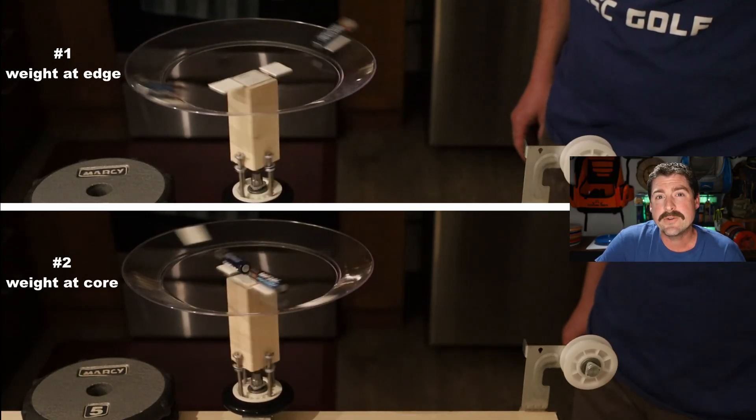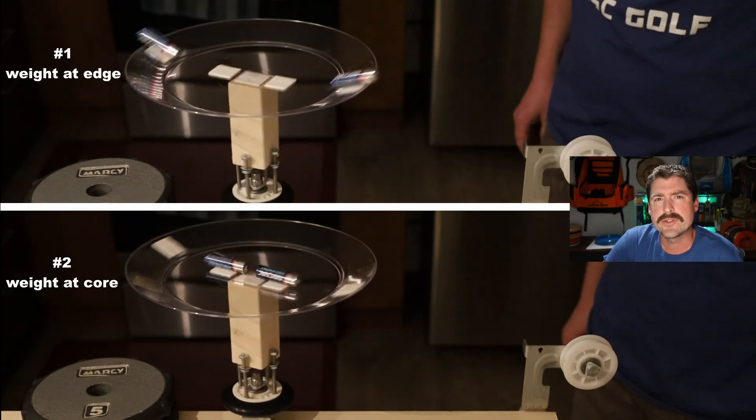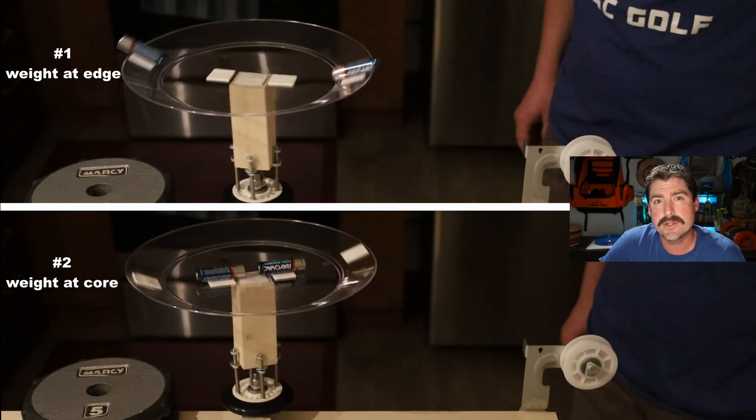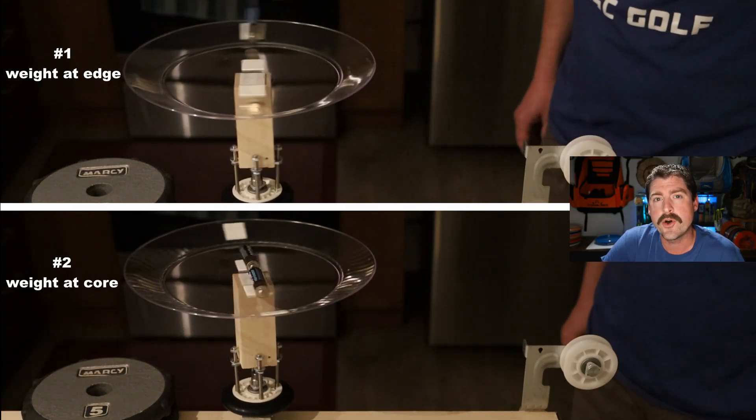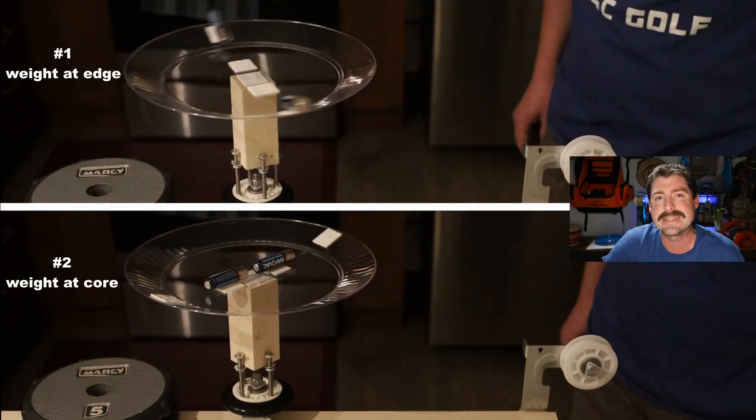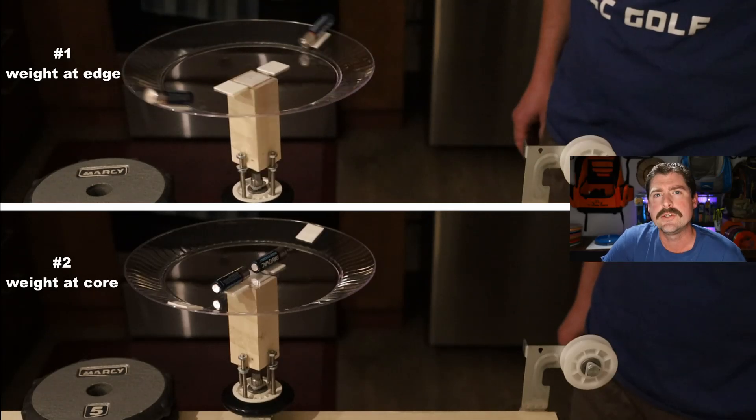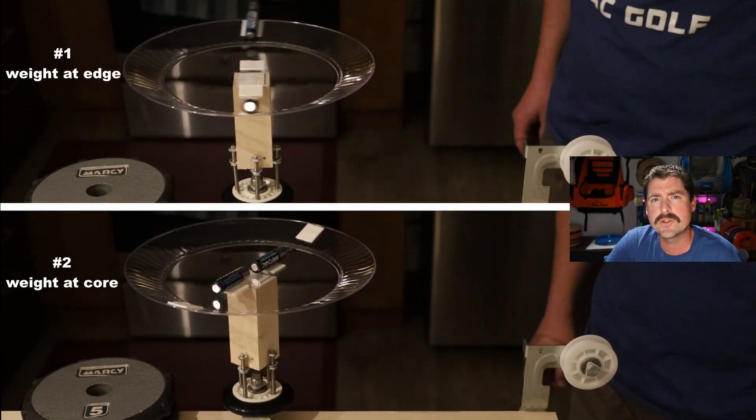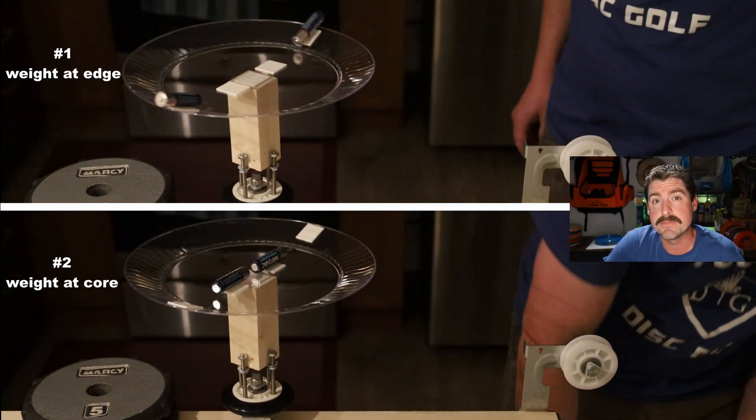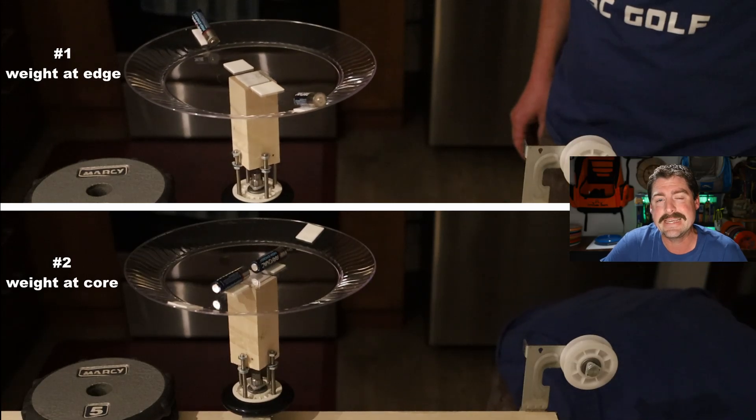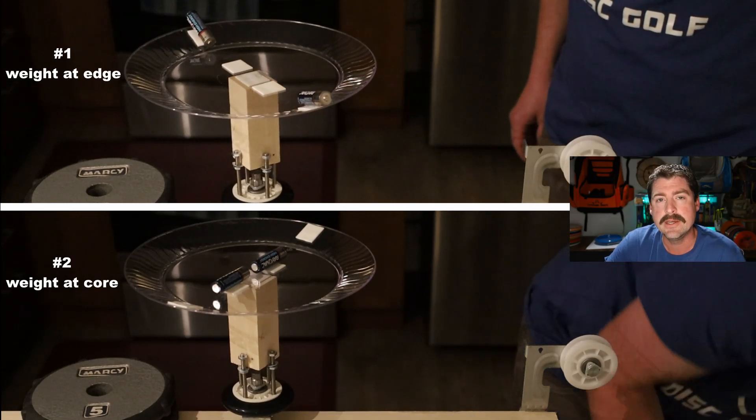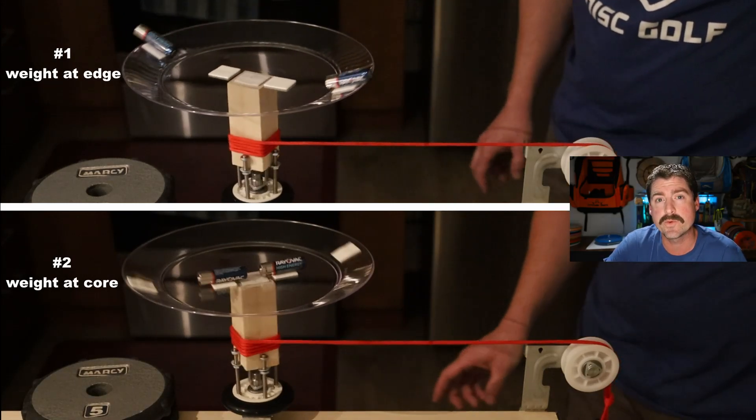Now, the downside of getting all that extra energy stored on the outer edge is that it's harder, slower, to get that energy stored there. You can see that the more even weight distribution disc spins up much faster and hits a higher spin rate than the one on top with weight on the outside.